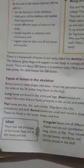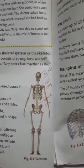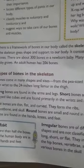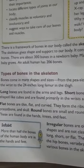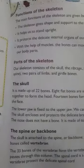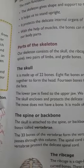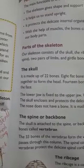In the previous video we studied about the human skeletal system. We covered the types of bones in the skeleton, functions of the skeleton, and parts of the skeleton. In the parts of the skeleton we studied in detail about the skull, the spine or backbone, and the ribcage.